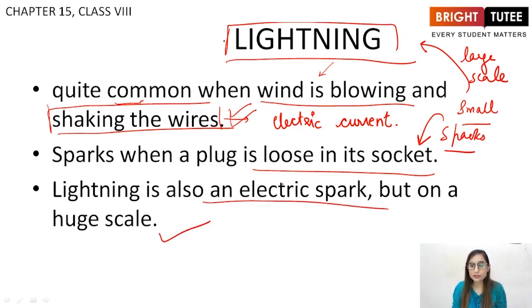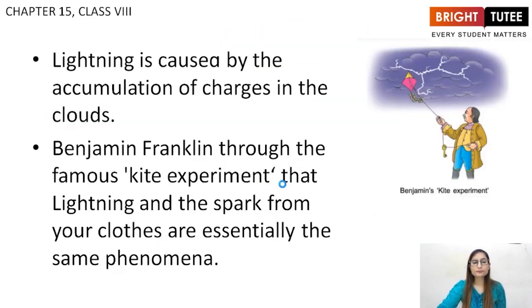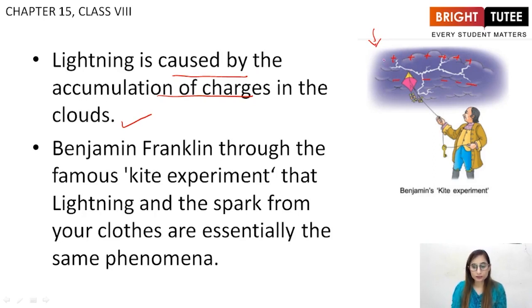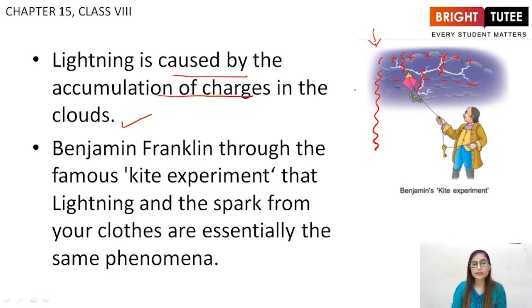Lightning is caused by accumulation of charges in the clouds present above us. Due to this accumulation, electric discharge takes place from the clouds to the earth or between different clouds. Benjamin Franklin, through his famous kite experiment, explained that lightning and the spark from your clothes are essentially the same phenomena.